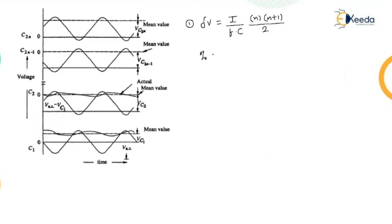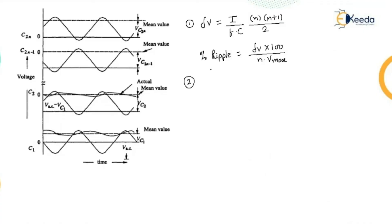The percentage ripple can also be found: percentage ripple = ΔV × 100 × 0.8 / (n · V(max)), where n is the number of stages. The number of stages goes up to 2n minus 1. Similarly, the voltage drop or regulation can be calculated.